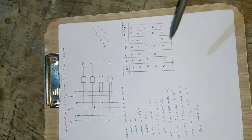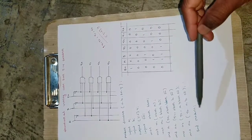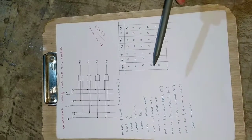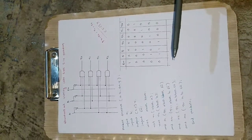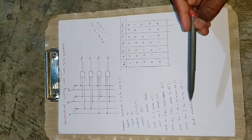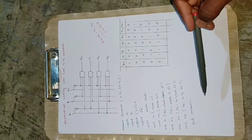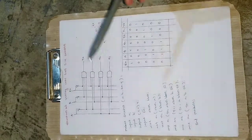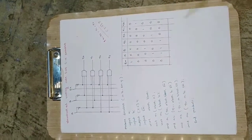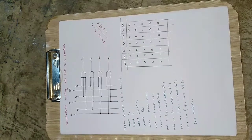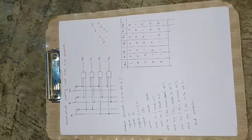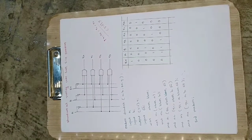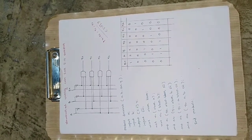Finally, we close with 'endmodule'. Whatever is written after endmodule is not executed and is treated like a comment, so all program code must be written between 'module' and 'endmodule'. This is how you can easily write the structural Verilog code for a 2-to-4 decoder. If you're new to the channel, please hit the like button and subscribe for more updates. Thanks for watching!